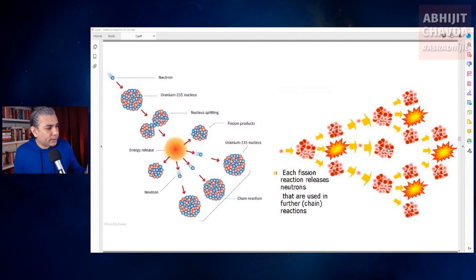Nuclear reactors take advantage of what's known as a nuclear chain reaction. In a nuclear chain reaction, the fission of one uranium atom causes the fission of more uranium atoms.